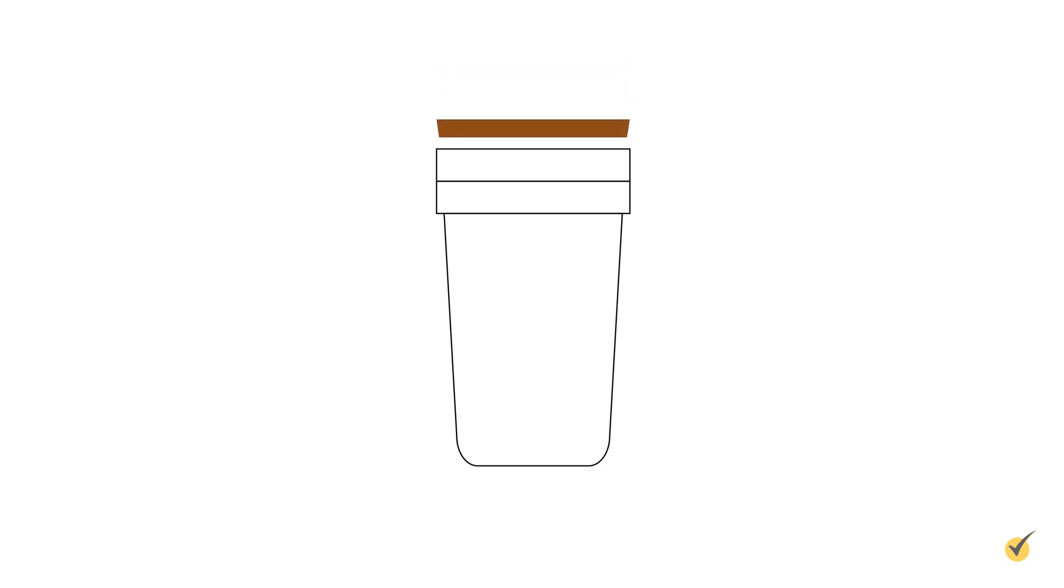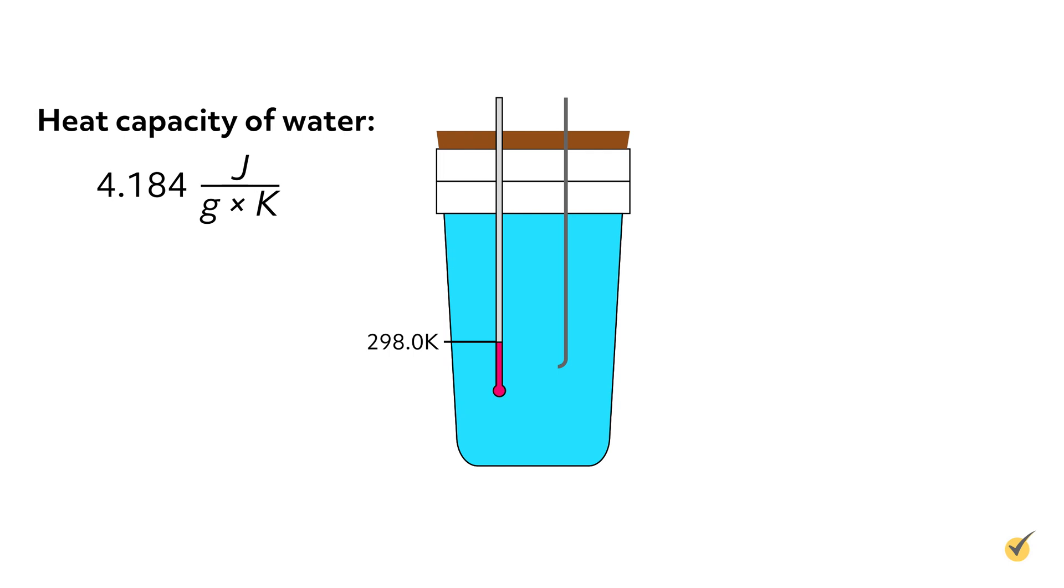The top is fitted with a cork stopper, which allows for a thermometer and stirrer to enter. It's filled with 100 grams of room temperature water, or 298 kelvin. The heat capacity of water is well known to be 4.184 joules per gram kelvin.